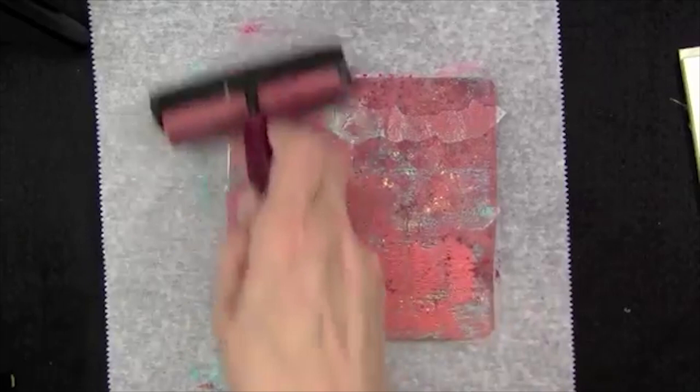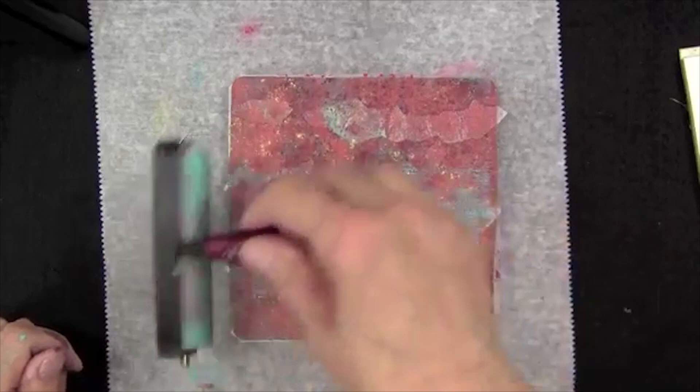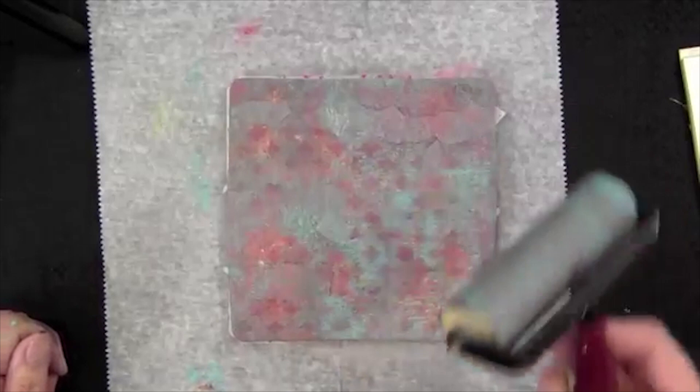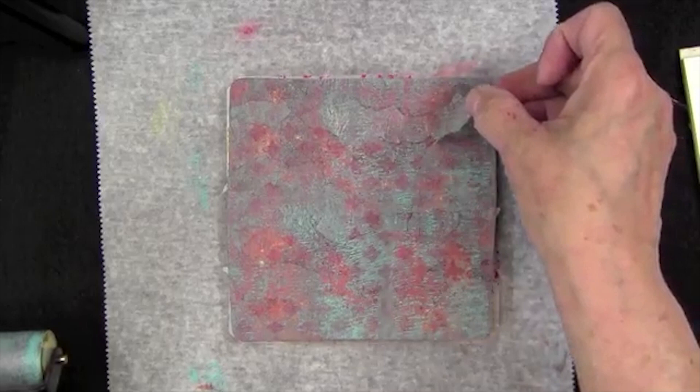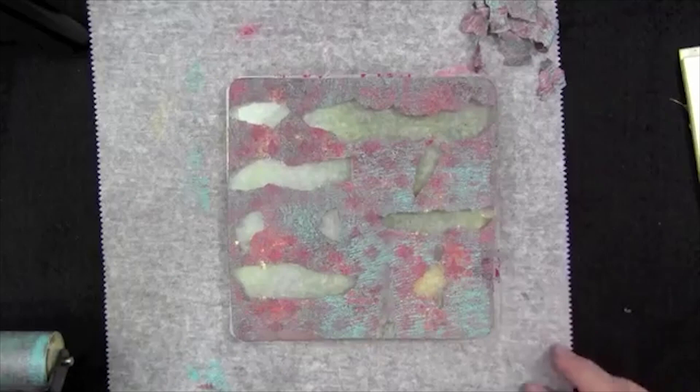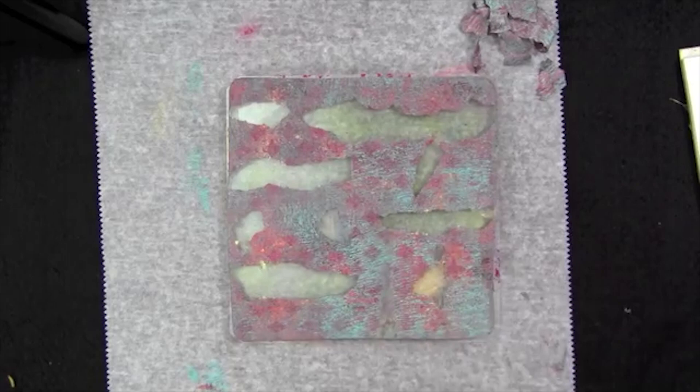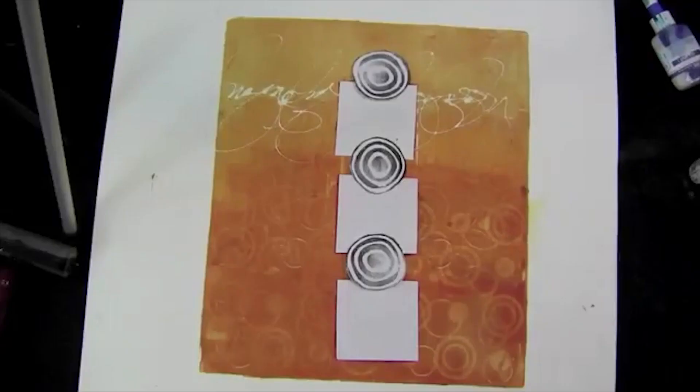I'm gathering up some more teal and putting another layer of the teal, and then I'm going to pull up the mask. That's the deli paper. Now I'm going to just let that dry. It's going to take a few minutes.